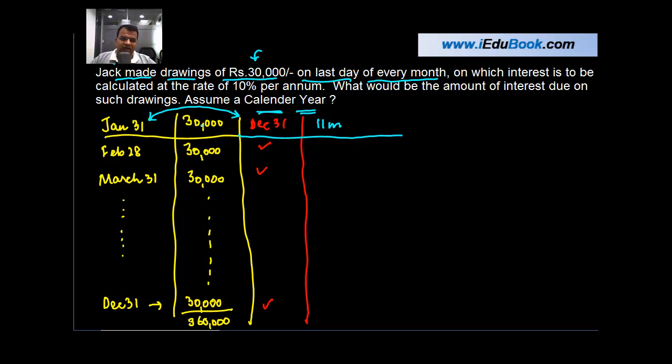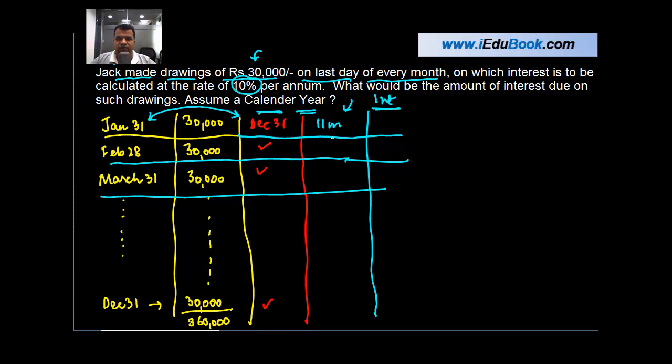The long method is: you take each of these drawings, calculate the period for which these drawings have been used, and add up the interest. For example, you calculate on 30,000 for 11 months at 10% per annum and get interest for this single drawing. Similarly, you get the interest for each drawing, add up the total. But there is a short method when two conditions are satisfied.